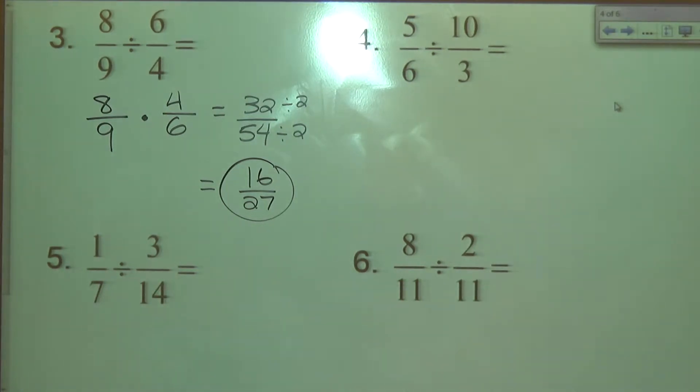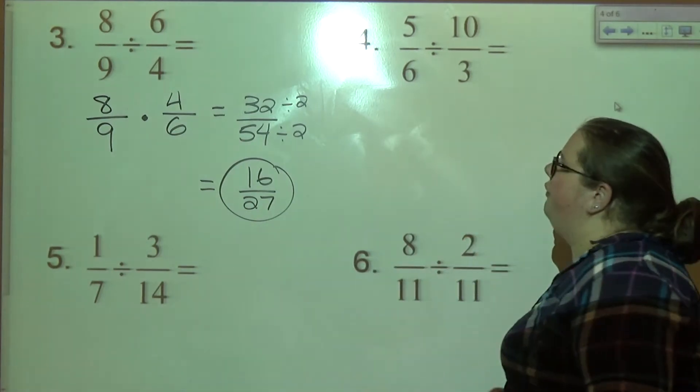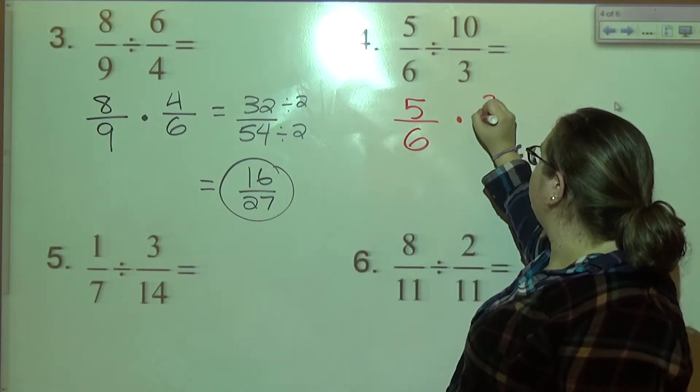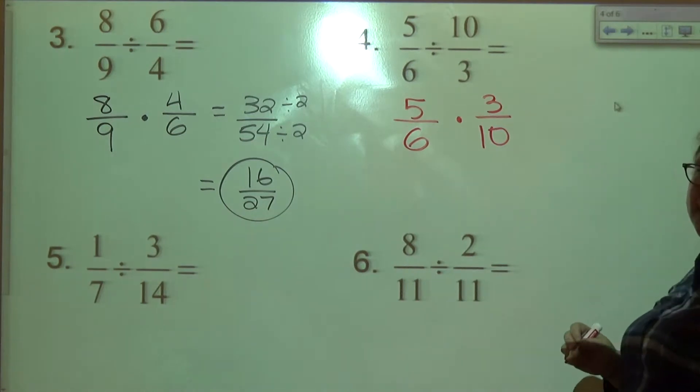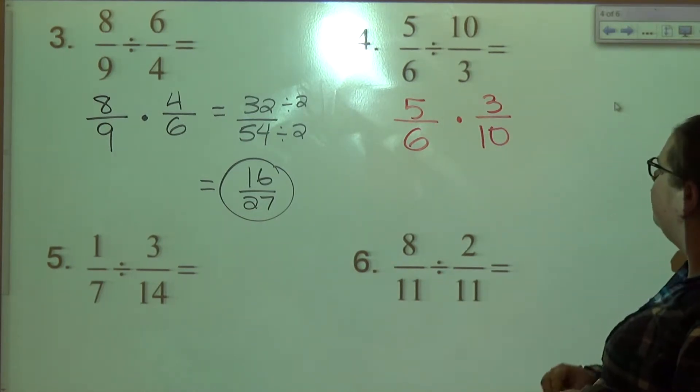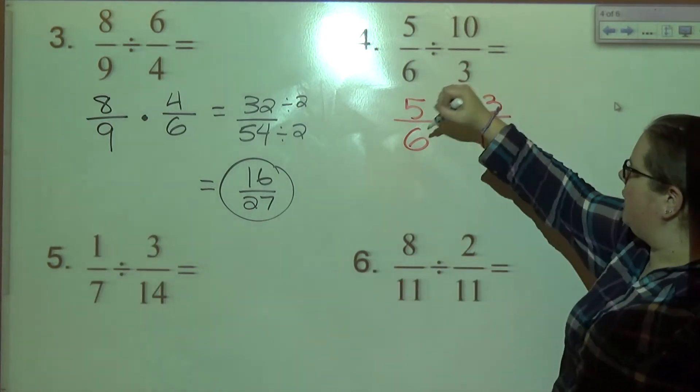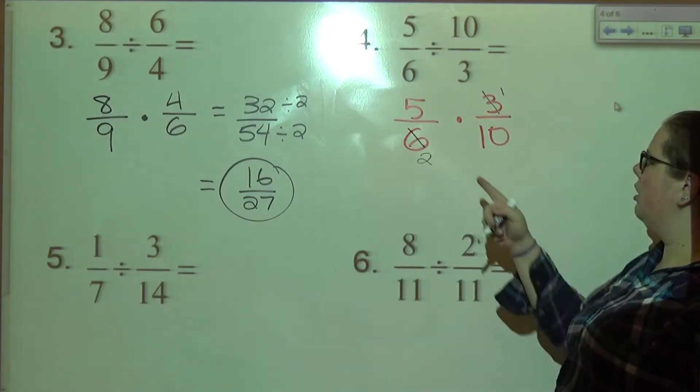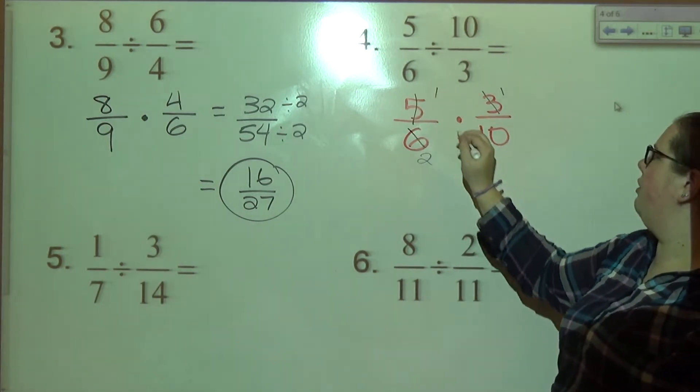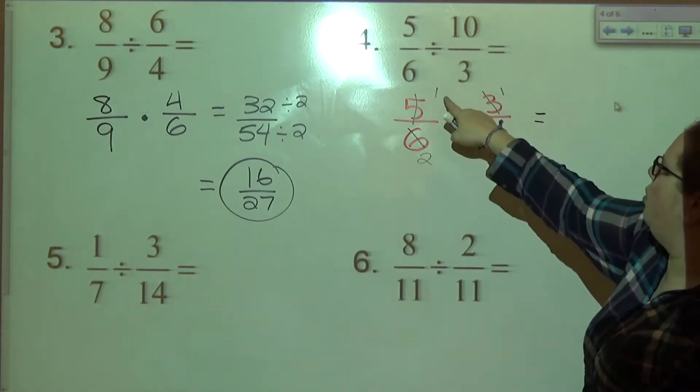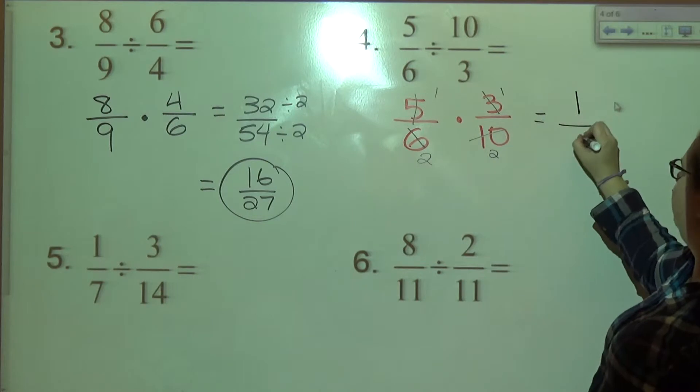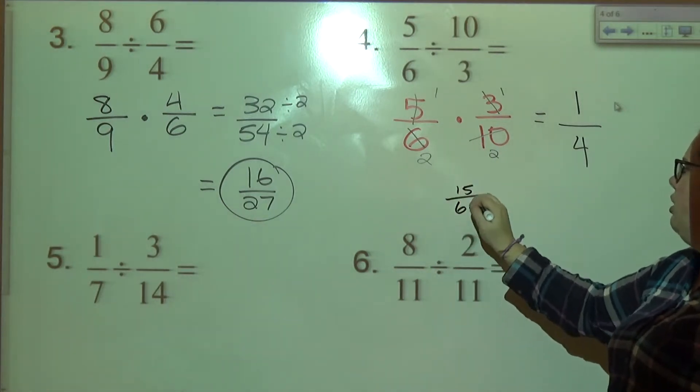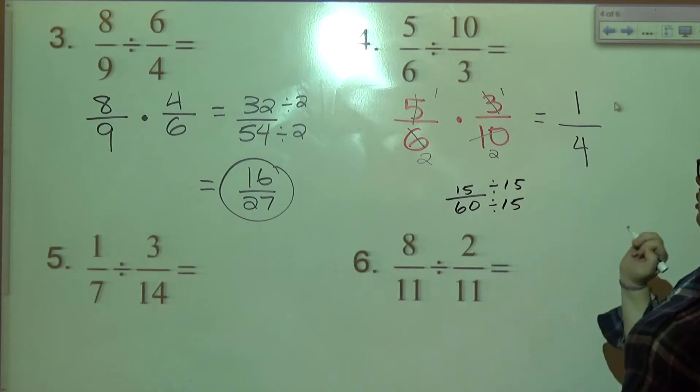Number four. Again, it's the same process over and over again. First fraction stays the same. Dividing by a fraction is the same as multiplying by the reciprocal. I'm going to cross cancel this time. Three and six. Do those cancel? Three goes into three once. Three goes into six twice. Five and ten. Divide by five. So one times one is one. Two times two is four. Again, if you had multiplied, you would have gotten 15 over 60 and you can divide the top and bottom by 15. And you get one fourth.